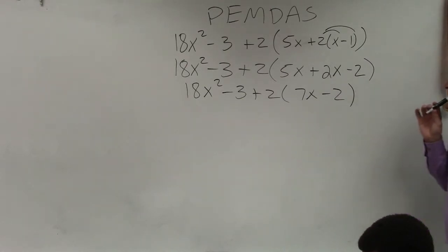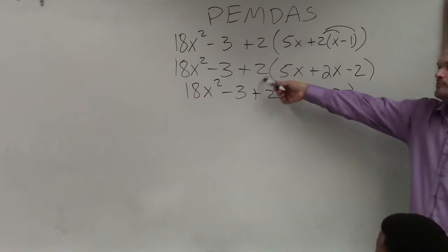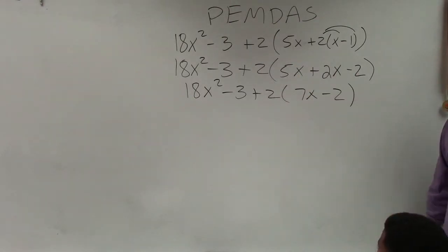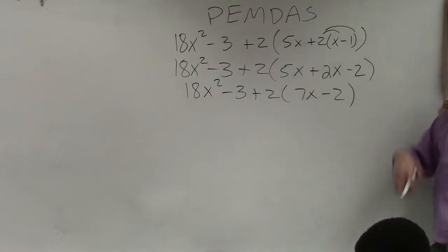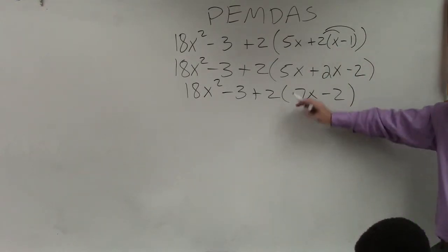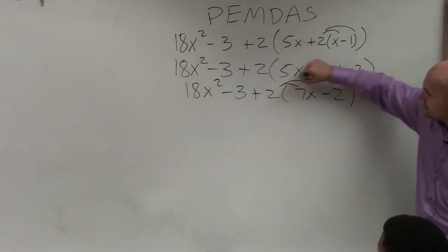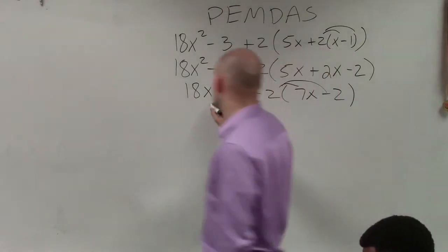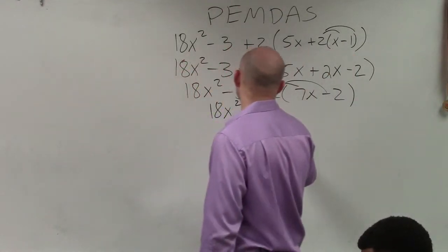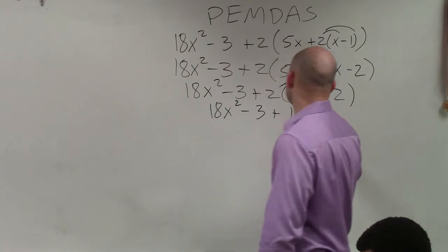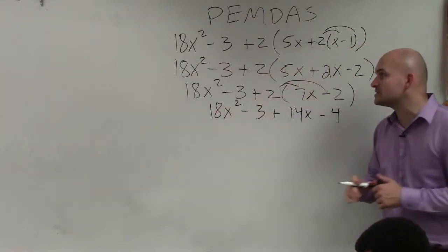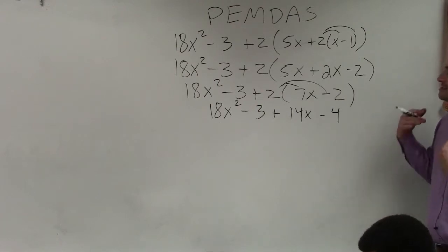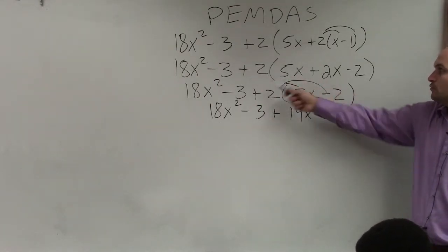Student: Why wouldn't you just do the distributive property throughout? Teacher: You could do distributive property for all of those, that's perfectly fine. I'm just showing it step by step. Now you can apply distributive property again. So we'd have 18x² - 3 + 2 times 7 is 14x, 2 times negative 2 is negative 4.